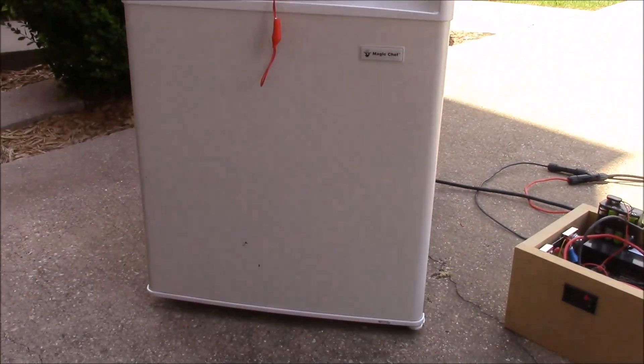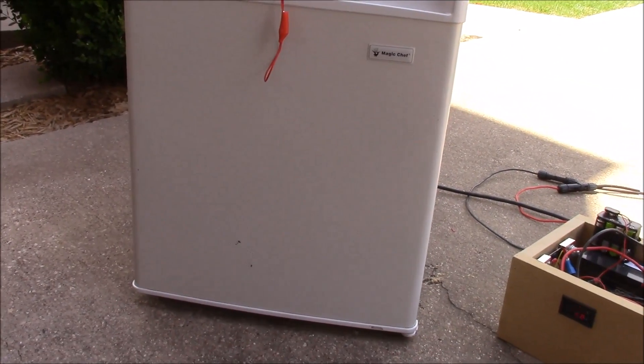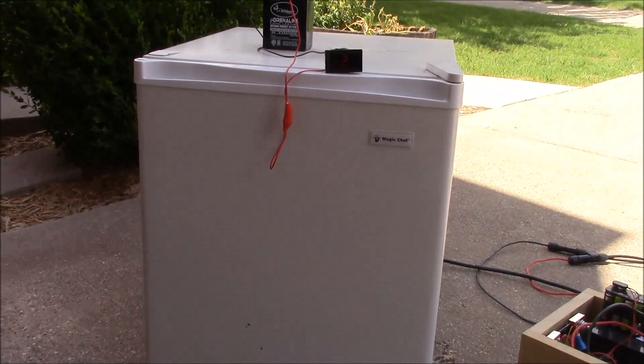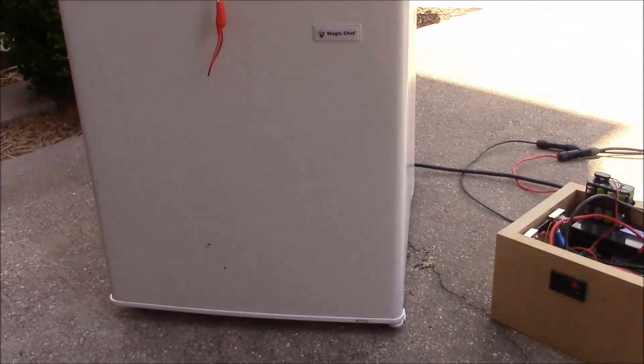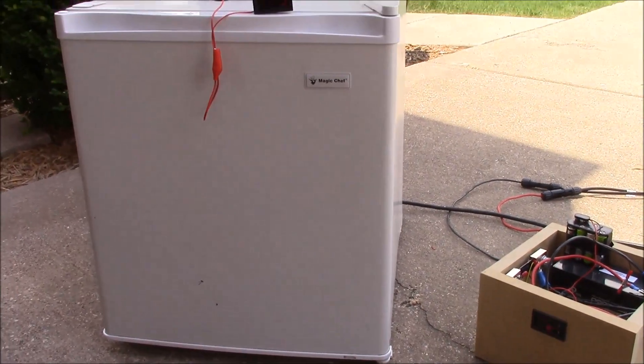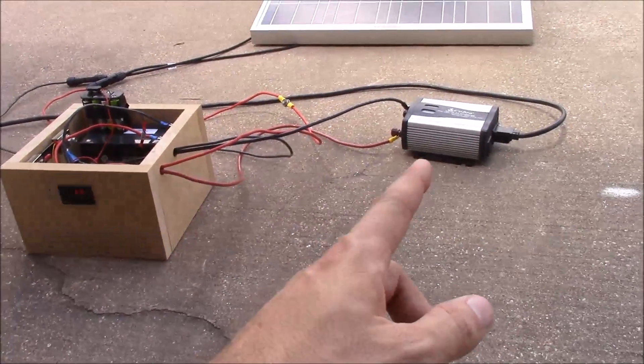Today we're going to look at a dorm refrigerator, mini refrigerator. We're going to test this. We're going to start moving into alternating current loads, things that you can power with your normal household power. And in order to do that we obviously have to use an inverter.